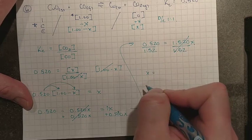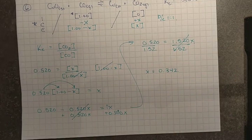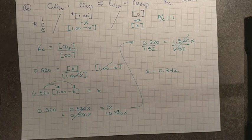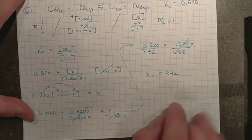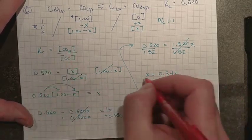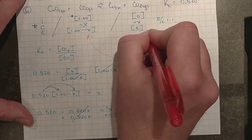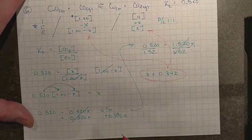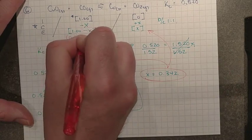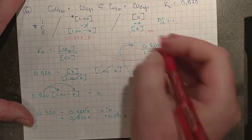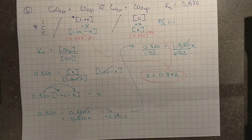Now this is, of course, not the answer. Be very careful. This is just the value for the change. This is what we got with this one. So this now has to be applied back here and here. And so 1 minus 0.342 would be 0.658. And this, of course, is just x, 0.342. You have now found the equilibrium concentrations.